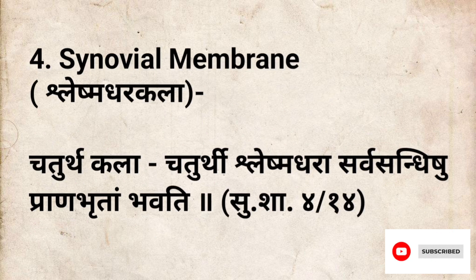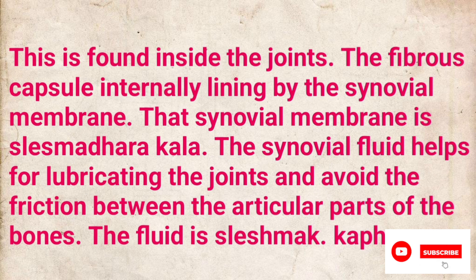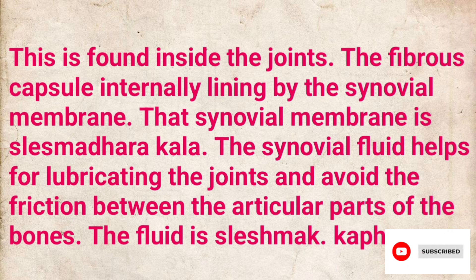Fourth kala is shlemdharakala, correlated to the synovial membrane. This is found inside the joints. The fibrous capsule is internally lined by the synovial membrane, and that synovial membrane is shlemdharakala. The synovial fluid helps for lubricating the joints and avoids friction between the articular parts of the bones.